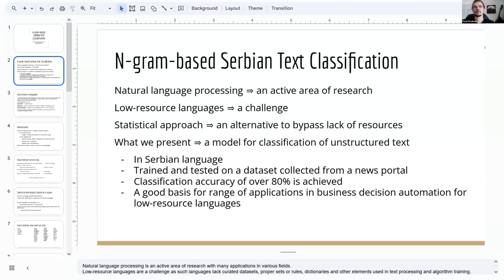The statistical approach is an alternative to bypass the lack of rule-based implementations. This paper presents a model for classification of unstructured text in Serbian language, which relies on N-gram statistics extracted from a training set. The model is trained and tested on a dataset collected from a Serbian news portal, which contains text articles written in common language, in categories like politics, chronic, Europe, and similar. The model achieved the accuracy of over 80%, and provides a good basis for a range of applications in business decision automation for low-resourced languages.